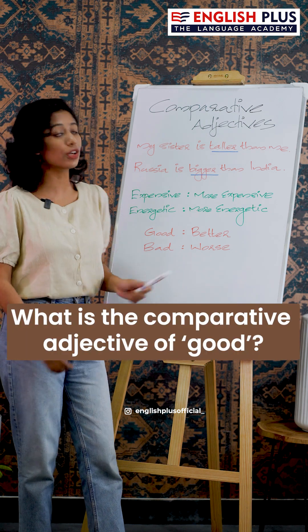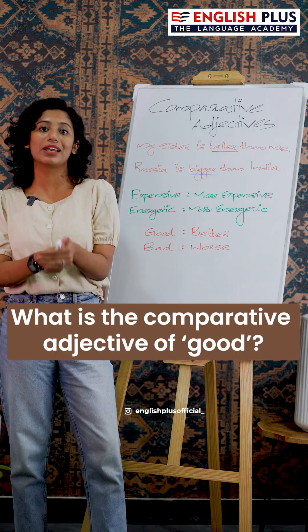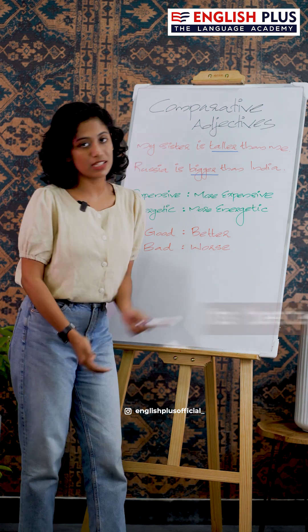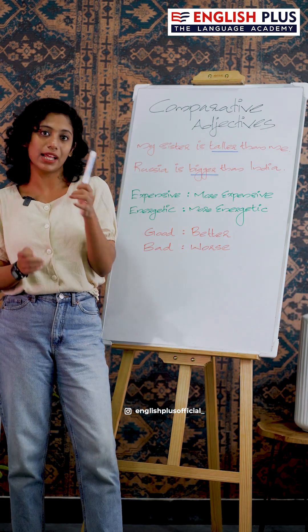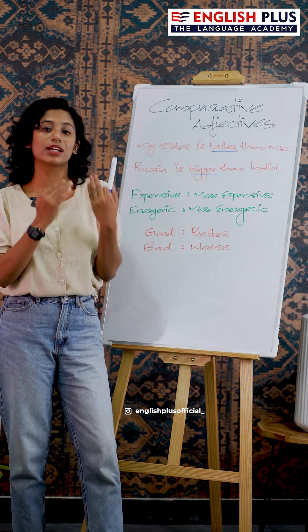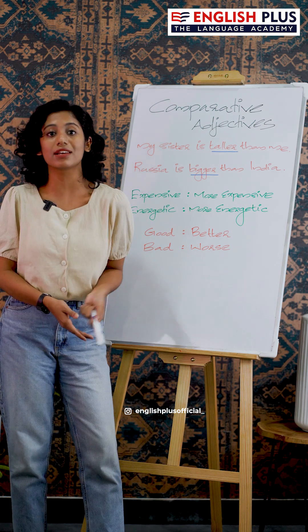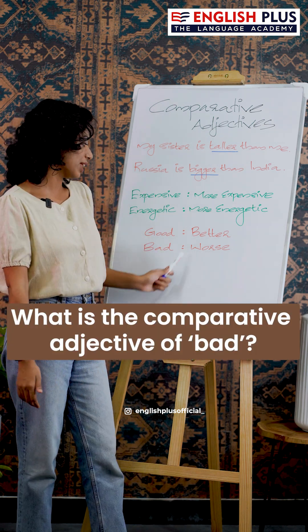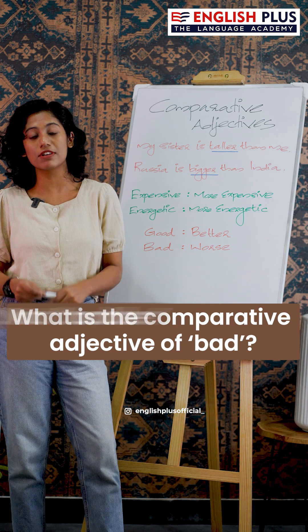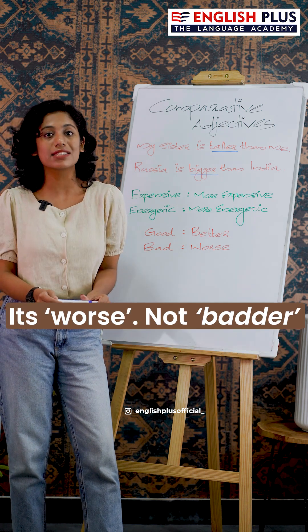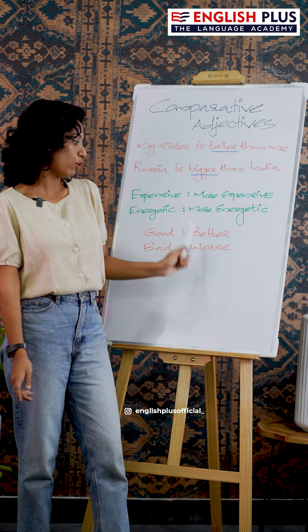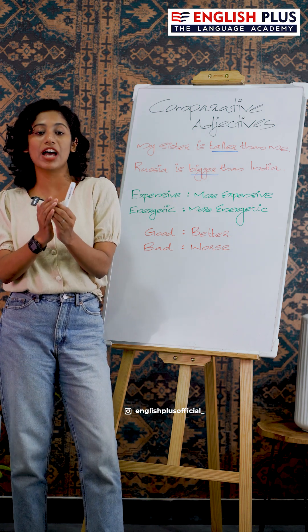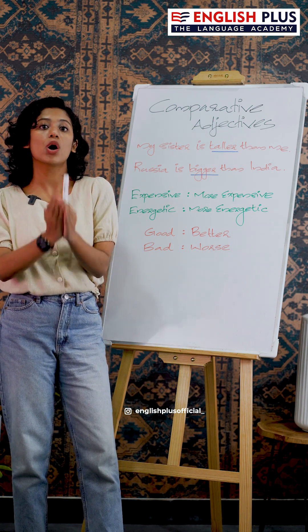For the word 'good,' the comparative adjective is 'better.' For the word 'bad,' the comparative adjective is 'worse' — spelled W-O-R-S-E. These are irregular comparative adjectives.